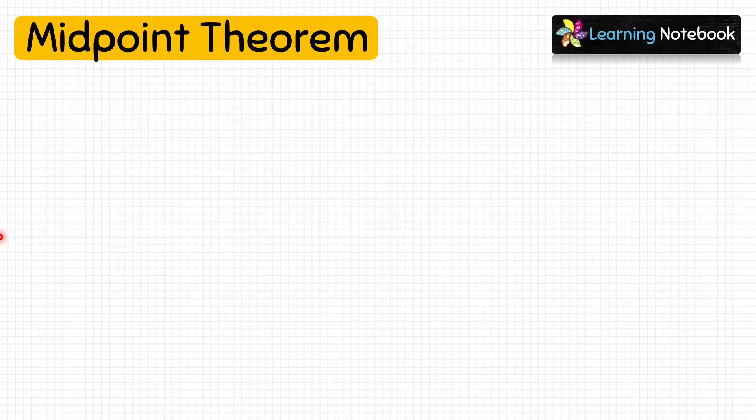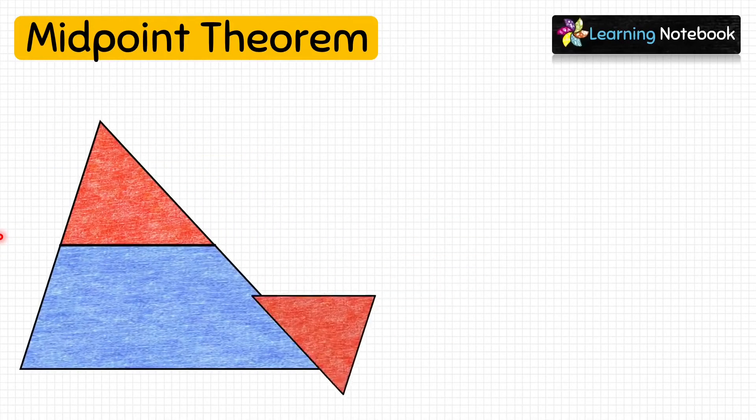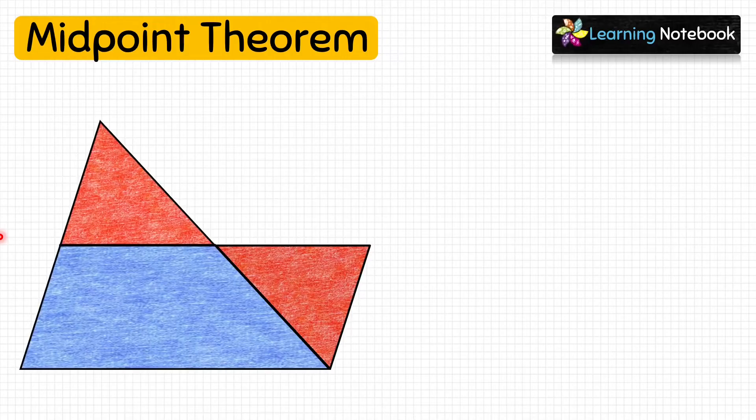Now let's take one A3 white sheet and write a heading on it: Midpoint Theorem. Next, paste these triangles on it as shown here. Now let's name the points as A, B, C, D, E, and F.